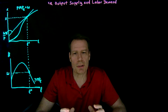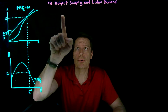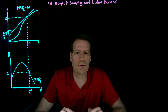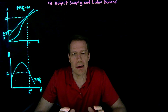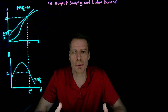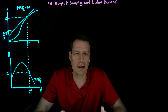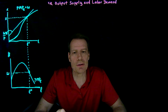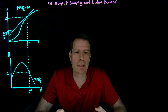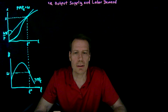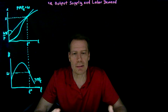Now we're going to use these two pictures to derive the firm's output supply and labor demand curves. We do that in exactly the same way as we did for consumers when we derived consumer demand curves. We started with the consumer diagram, found an optimal bundle for a given price, and then changed the price to see what happens to that optimal bundle. And that allowed us to trace out the consumer's demand curve.